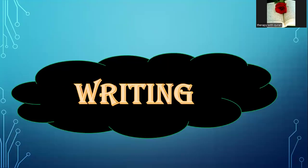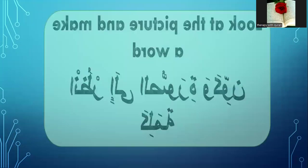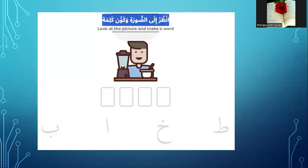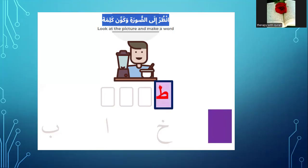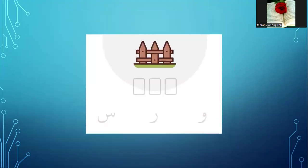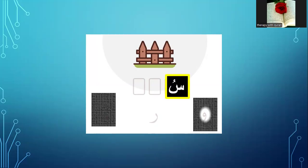Very good. Now I will test your writing skills. Please look at the picture and make a word. Number one — what can you see? Yes, it's tabaakhun. Where is the first letter? Ta — yes, ta. The second: tabba, ba. The mad letter is alif. Yes — khun. Tabaakhun. Please look at the second picture — what can you see? The first letter is a sad. Yes, it's surah. The mad letter is waw — surah.